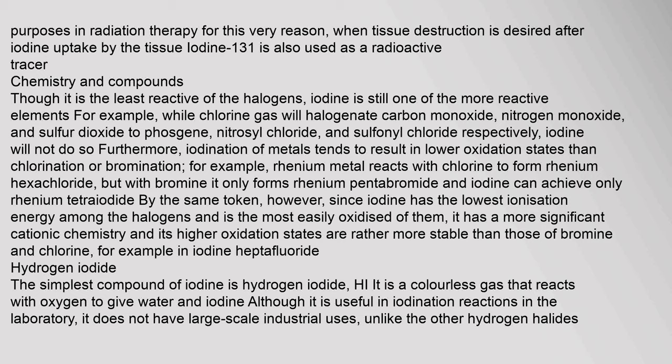Chemistry and Compounds: Though iodine is the least reactive of the halogens, it is still one of the more reactive elements. For example, while chlorine gas will halogenate carbon monoxide, nitrogen monoxide, and sulfur dioxide to phosgene, nitrosyl chloride, and sulfonyl chloride respectively, iodine will not do so.